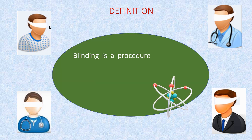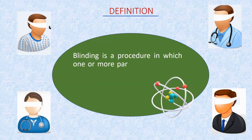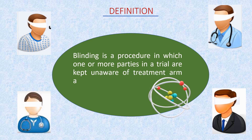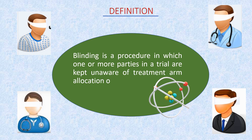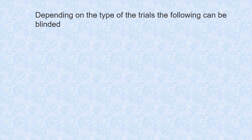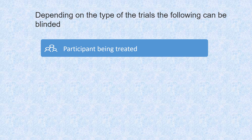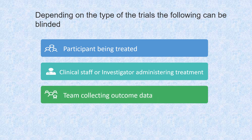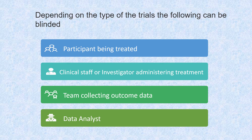Blinding is a procedure in which one or more parties in a trial are kept unaware of treatment arm allocation of participants. Depending on the type of the trial, the following can be blinded: participants being treated, clinical staff or investigators administering treatment, and the team collecting outcome data or data analysts.